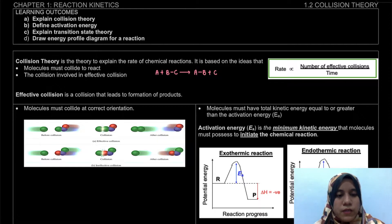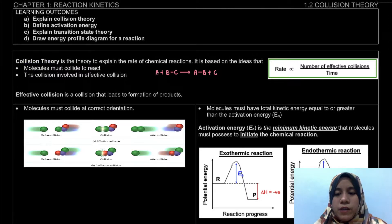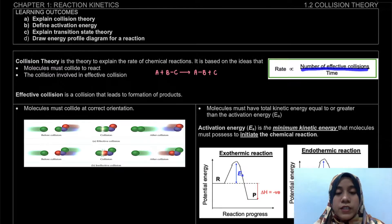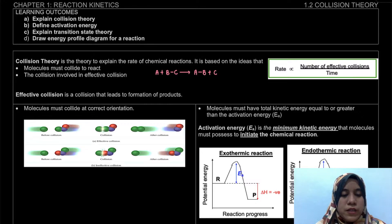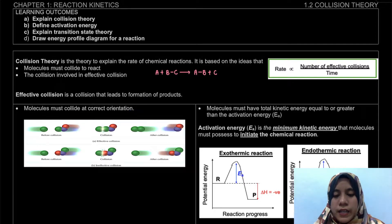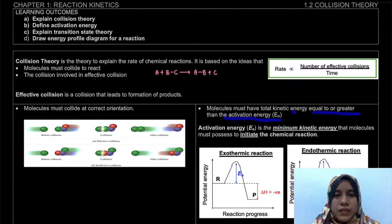To summarize collision theory: rate is directly proportional to the number of effective collisions. The requirements for effective collision are that molecules must collide at the correct orientation, and they must have total kinetic energy equal to or greater than the activation energy.